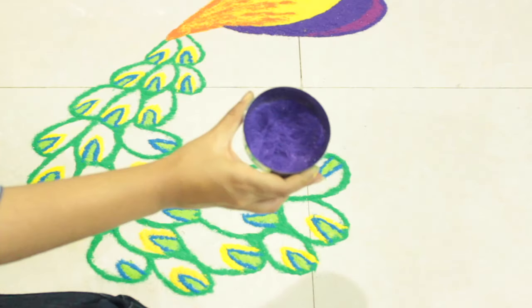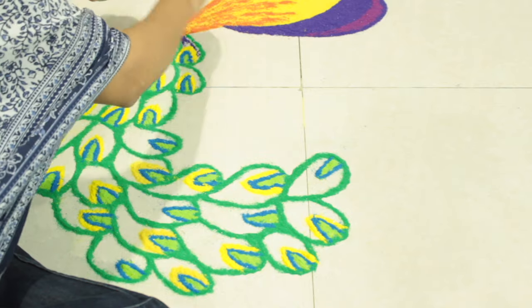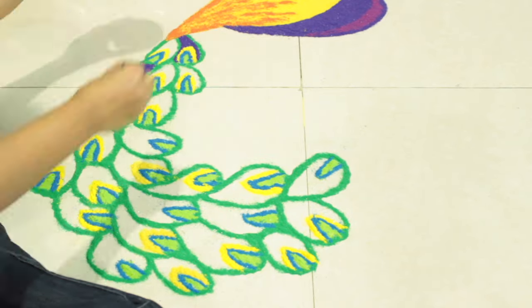Now take the purple color which we had used for the body of the peacock and fill it in a few of the feathers in which we had added yellow color.